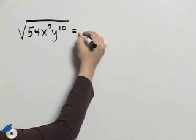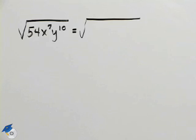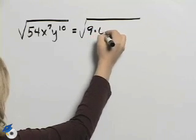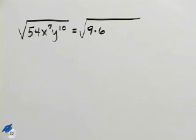I will do that by factoring 54. I know that 54 is 9 times 6, and 9 is a perfect square. 6 is not a perfect square.